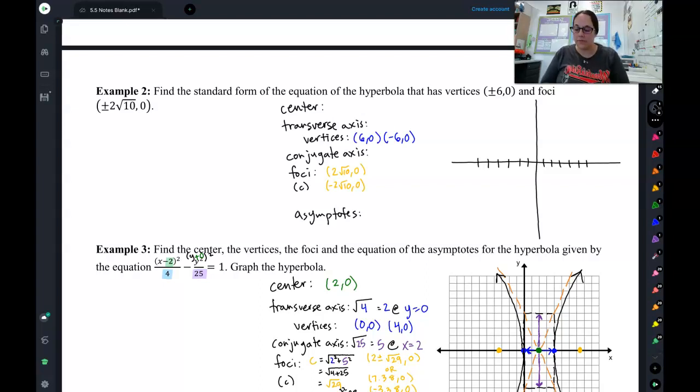Let's start by looking at example two. In this example, we are working backwards, so it gives us some information about the hyperbola, specifically the vertices and the foci, and we need to end with an equation.